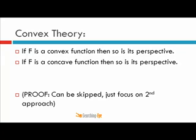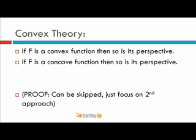If you have a function f which is convex and you apply a perspective transformation, the convexity of f is preserved. If it is convex, its perspective will be convex; if it is concave, its perspective will be concave. The proof of this can be skipped if we just want to focus on Kullback-Leibler divergence, but I will prove it.